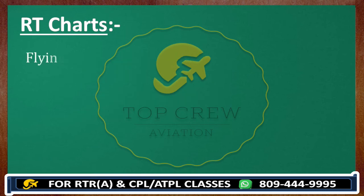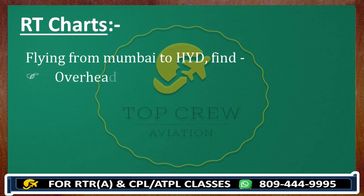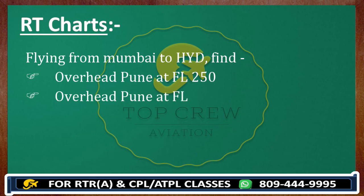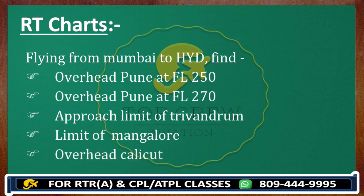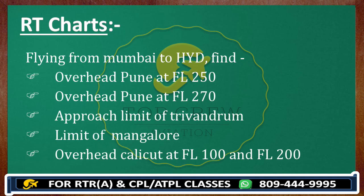If you are flying from Mumbai to Hyderabad, find out: overhead Pune at flight level 2-5-0, overhead Pune at flight level 2-7-0, the approach limit of Trivandrum, the limit of Mangalur Control, and ATC overhead Calicut at flight level 1-0-0 and at flight level 2-0-0. Find out all chart numbers and ATCs for these situations. I will tell you in the next video.